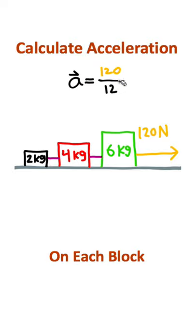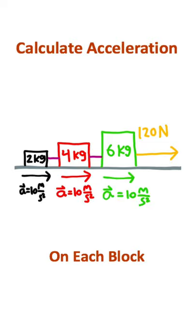Now, I think we can do this division here in our head. That's going to be 10 meters per second squared. So this is going to be the acceleration acting on every single block. The reason the same acceleration acts on every single block is because they're all attached, so all of these are going to move with the same acceleration.